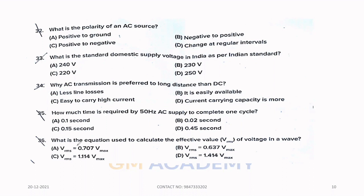Thirty-six. What is the equation used to calculate the effective value Vrms of voltage in a wave? Vrms equals Vm by root 2. 1 by root 2 is 0.707. So, option A, 0.707 Vmax.